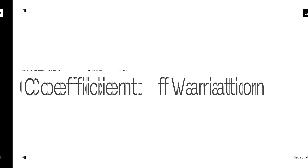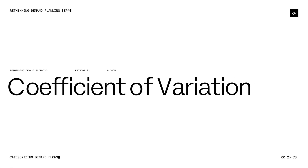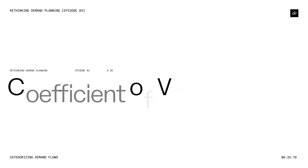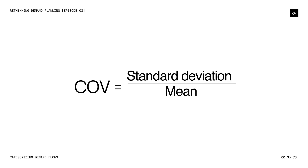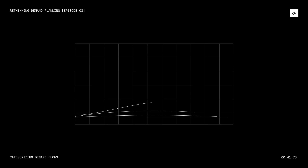In this video we will share the methodology needed to plot demand flows by coefficient of variation patterns against volume. The definition of the coefficient of variation is the standard deviation divided by the mean. More minor deviations mean a calm or stable flow, while more significant deviations mean a turbulent or chaotic flow.